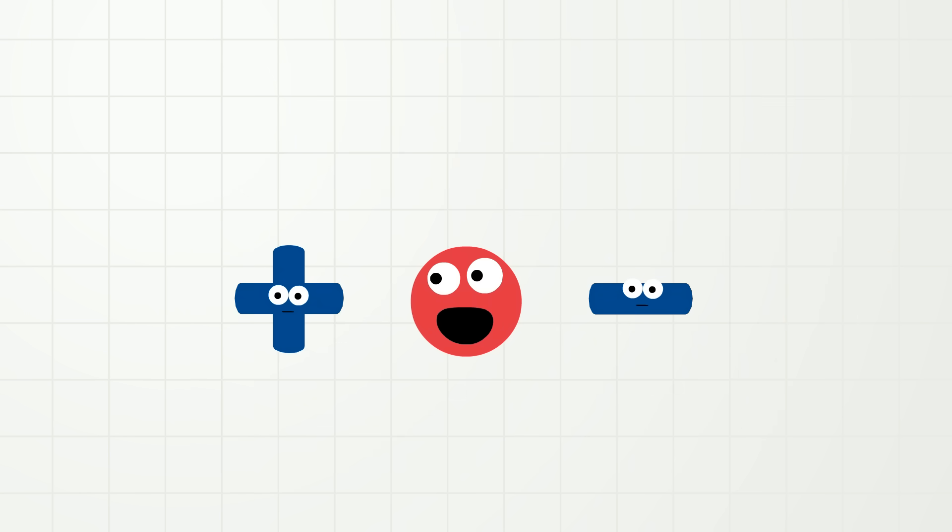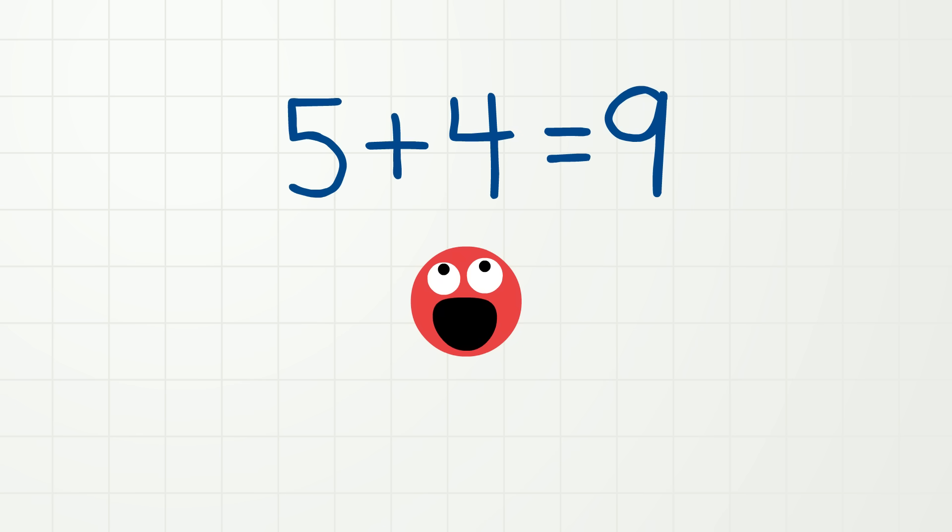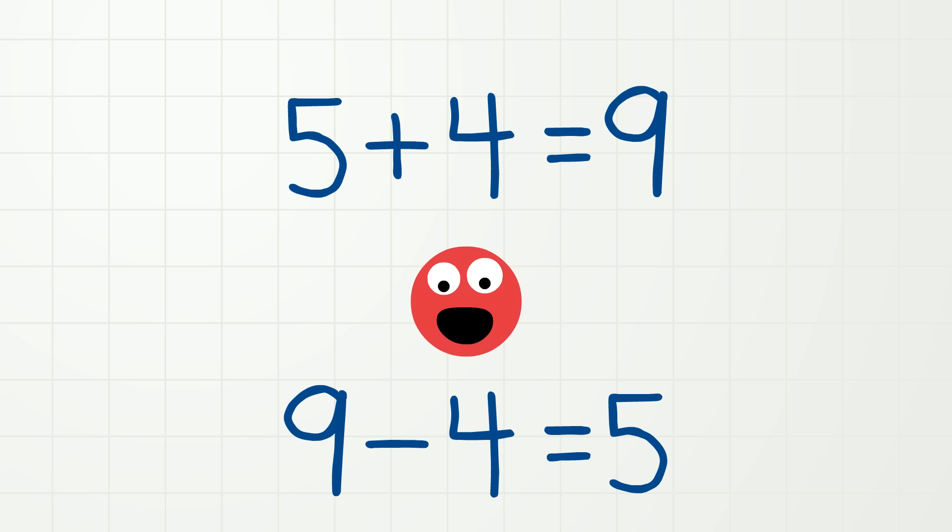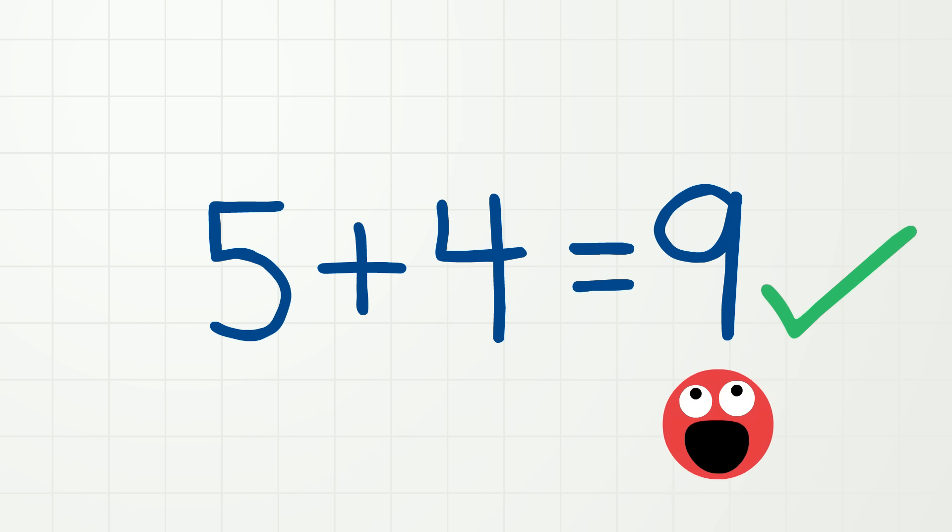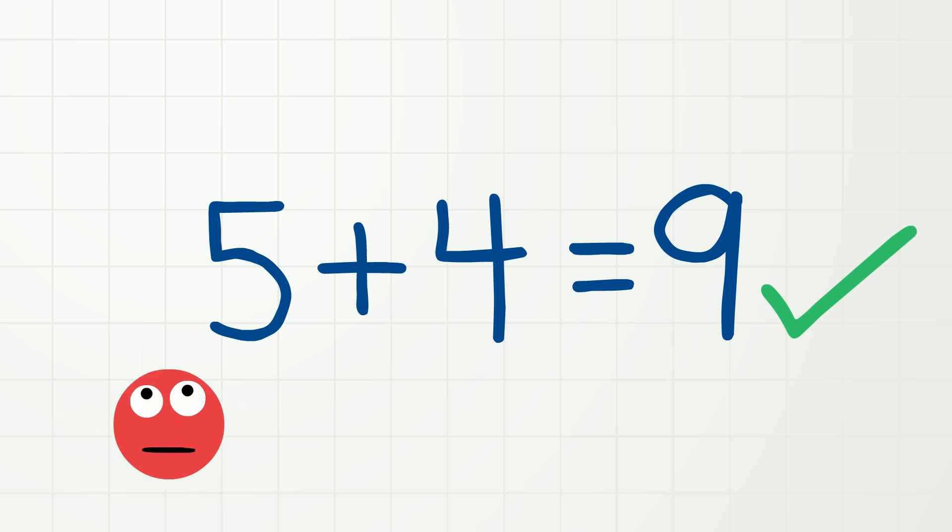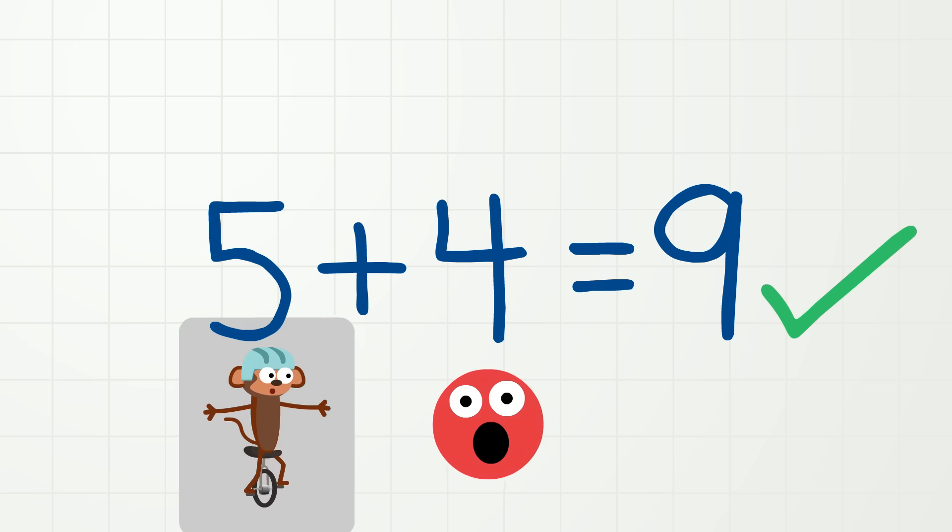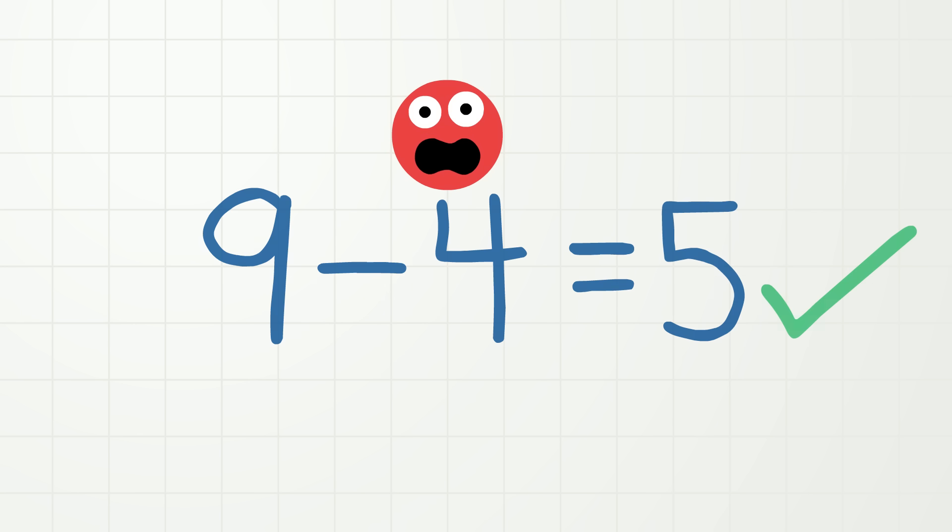And we can use the plus sign and the minus sign in opposite ways with the same numbers to check if our math is correct! No, really! Watch! If five plus four is equal to nine, then nine minus four is equal to five! Same numbers, different order, and different signs, but both are correct! Five plus four equals nine! Correct! Nine minus four equals five! Correct! Okay, that's enough!